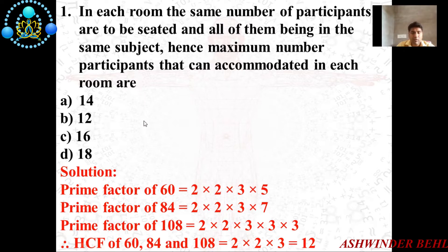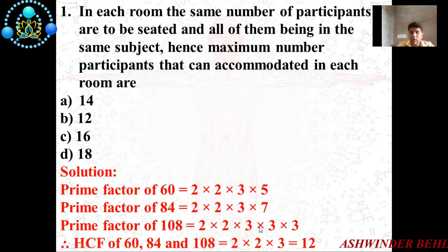Now we discuss the solution. The prime factorization of 60 is 2 × 2 × 3 × 5. The prime factorization of 84 is 2 × 2 × 3 × 7. Similarly, the prime factorization of 108 is 2 × 2 × 3 × 3 × 3. The HCF of 60, 84, and 108 is 2 × 2 × 3, which equals 12.